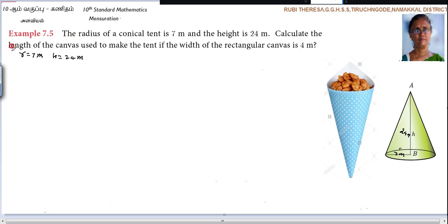What are they asking? Length of the canvas used to make the tent if the width of the canvas is 4 meters. Width is equal to 4 meters. They are asking the length of the canvas.